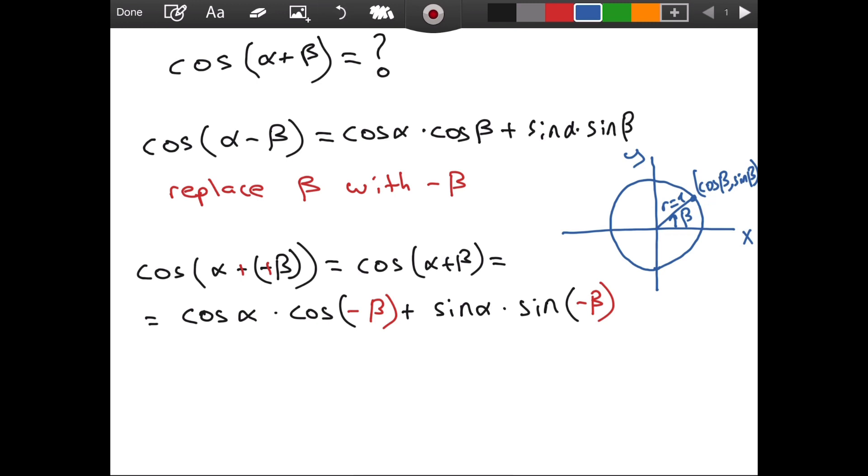What is negative beta? It is simply the other way, like this. And as you can see, the projection over the x-axis is the same. So, cosine of beta and cosine of negative beta are the same because, as we can see from our diagram, they have the same x component.